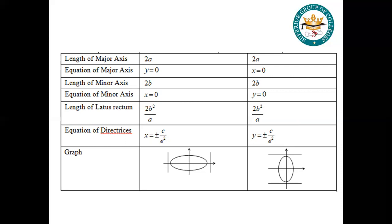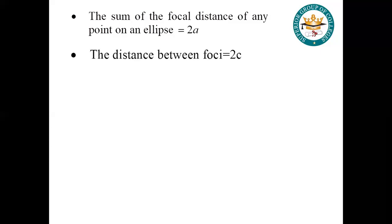If you remember the table, you can easily do this exercise. You have to take these things and put them in the question. Two major points: the sum of the focal distance of any point on the ellipse is 2a. The distance between foci is 2c.